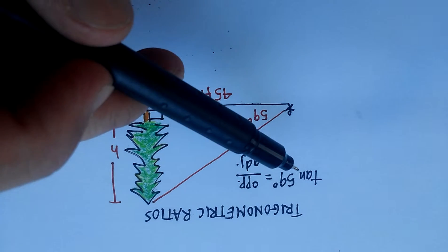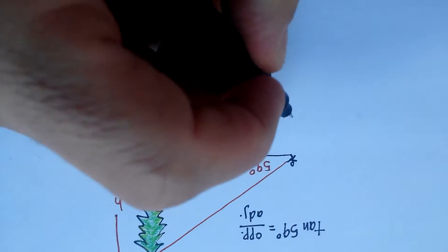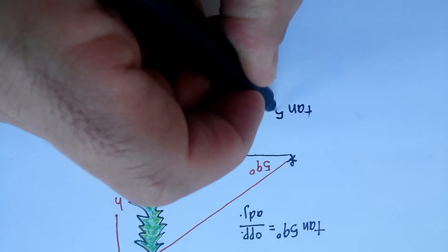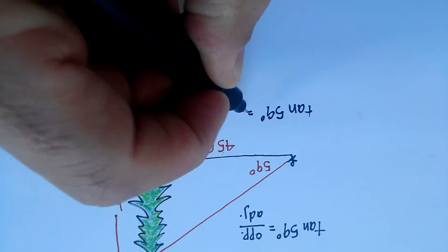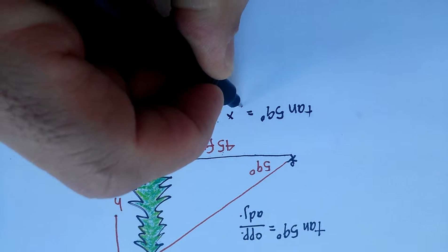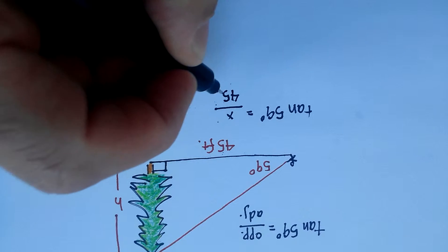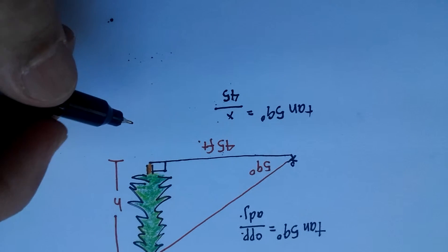We can begin to solve this problem by saying that the tangent of 59 degrees is equal to the opposite, which is our unknown x, over 45 feet.